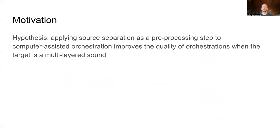Now that we've covered computer-assisted orchestration and source separation, I'll explain our hypothesis and the motivation behind this work. When you have a target sound that consists of multiple sources that overlap in time, Orchidea cannot distinguish between the two sources and attempts to orchestrate them together. This leads to an orchestration in which the whole orchestra suddenly shifts back and forth between sources, instead of orchestrating both as separate layers. Another issue arises when performing dynamic orchestration and dealing with time segmentation. Consider a target comprised of two sounds: sound A is a continuous sound that doesn't change over time, and sound B has many onsets and changes in pitch. Without separation, every time sound B changes, a new onset will be generated for the entire orchestration, cutting up sound A into many small chunks instead of a continuous drone.